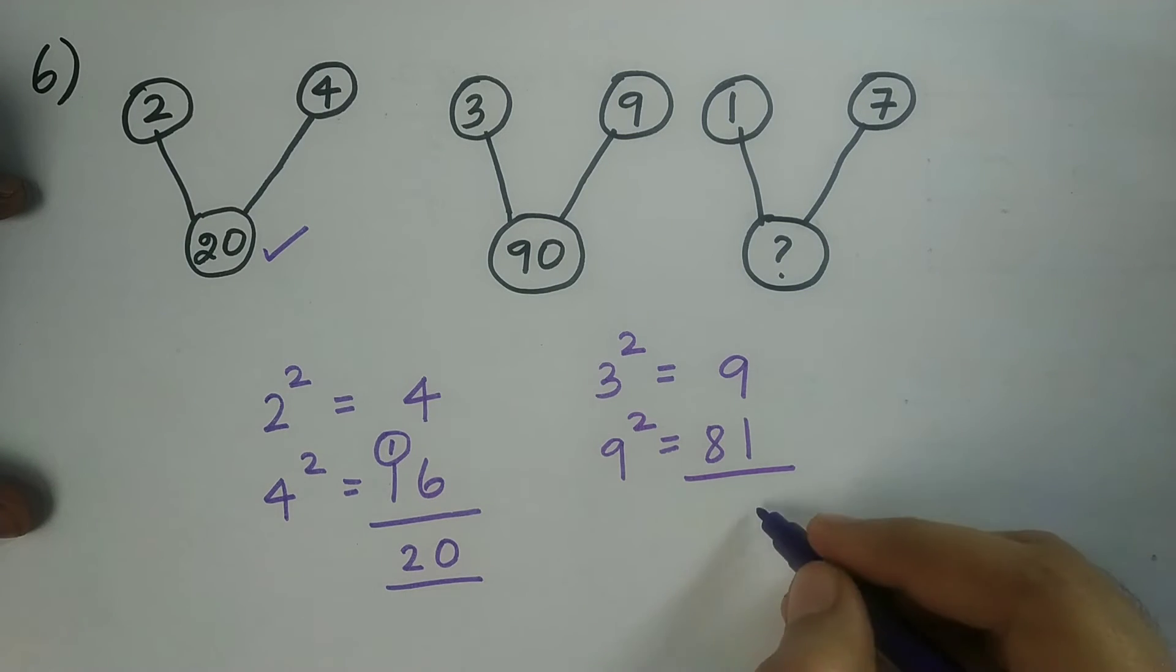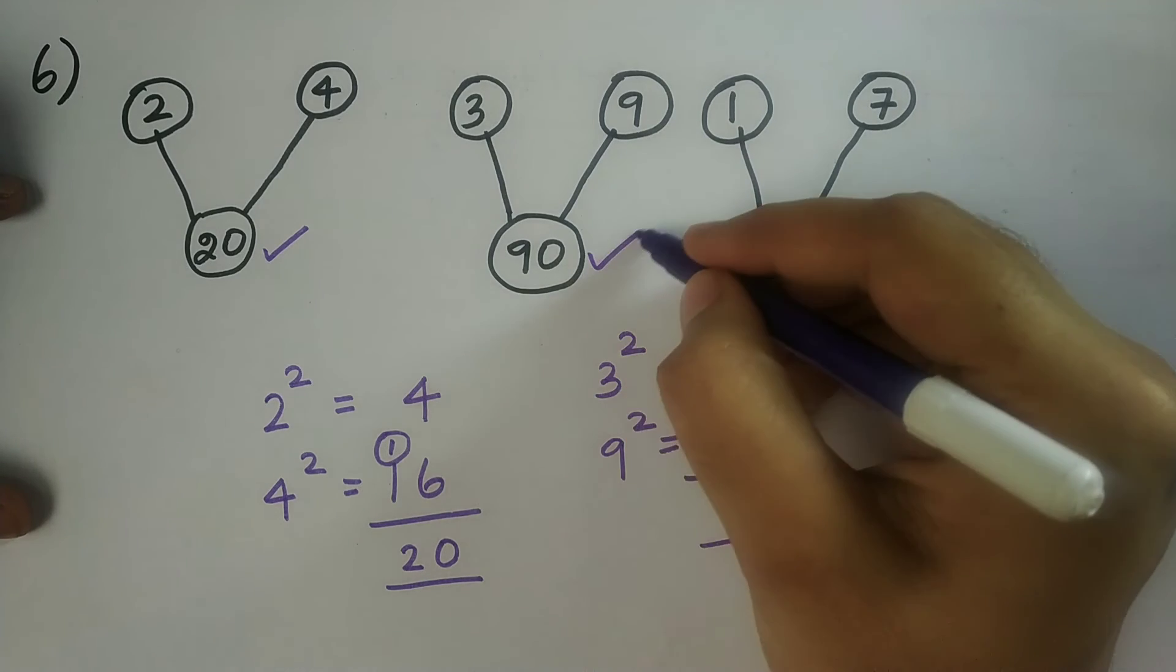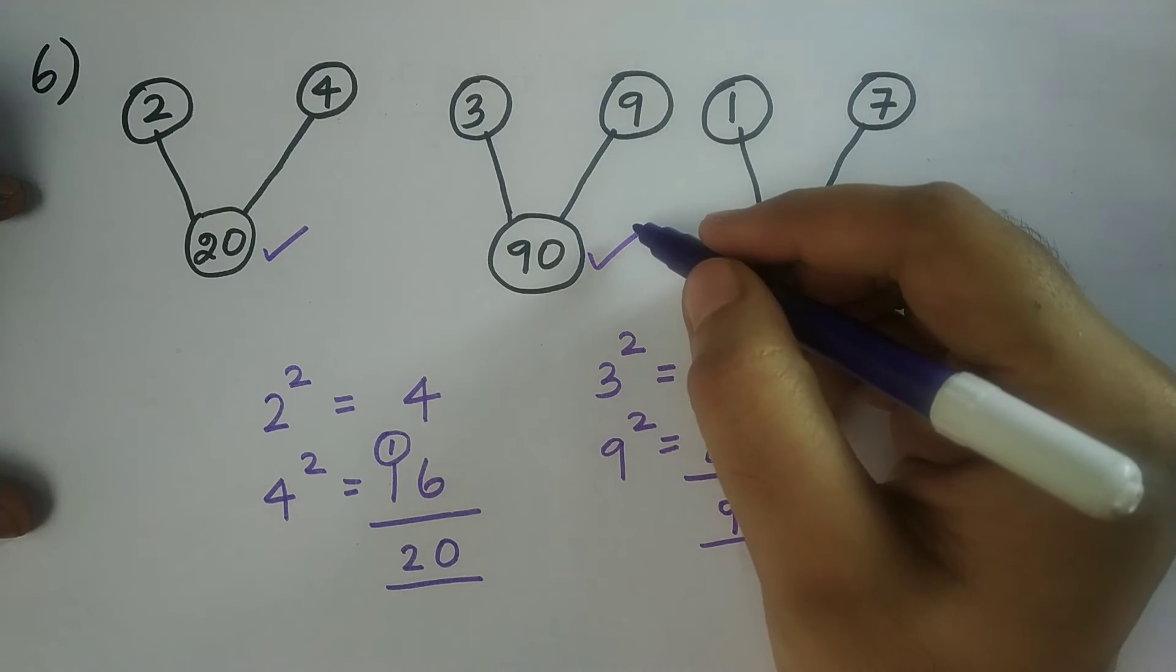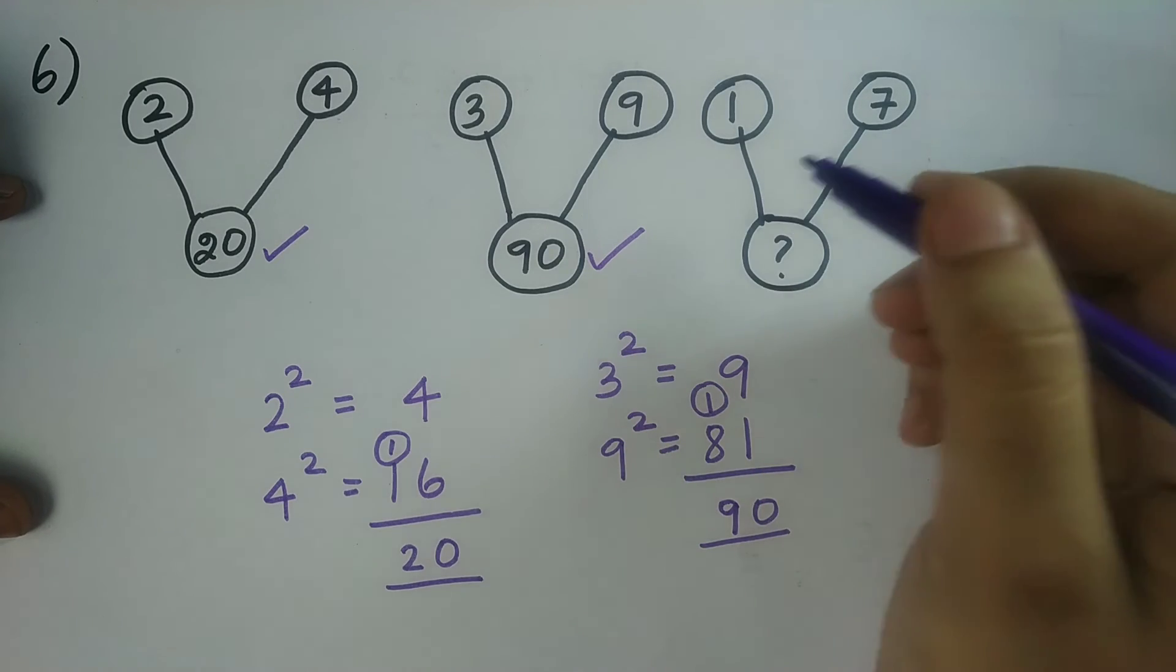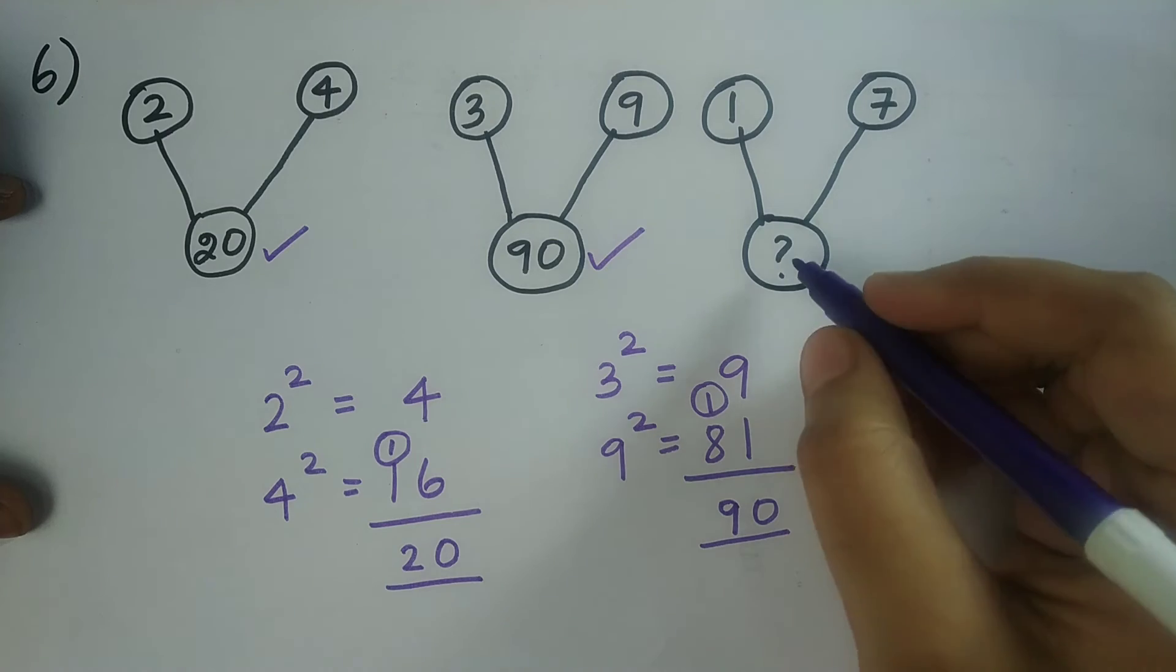Now I need to add these two values. So I will be getting 90. So this value is matching with this. So therefore, this logic is perfectly correct for this sum. Now let us solve and find the answer.